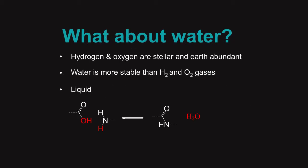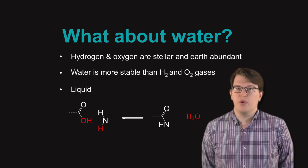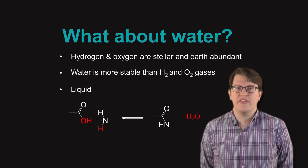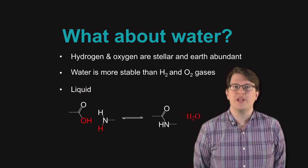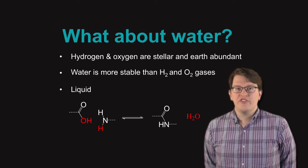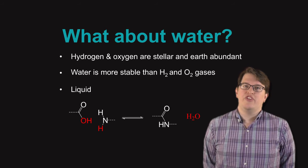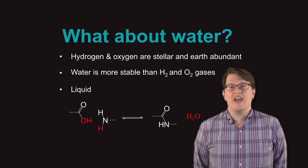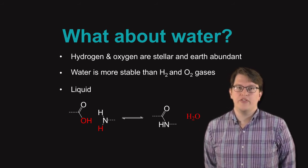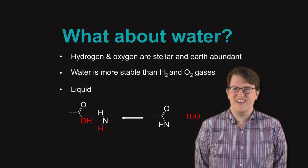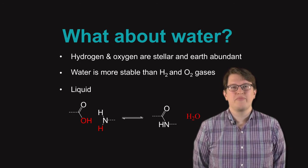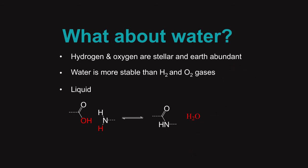So what about water? Hydrogen and oxygen are both stellar and earth abundant, which means that water is possible to be formed in numerous places. Water is also more stable than hydrogen and oxygen gases at the conditions of the surface of the earth. This is why fire produces water as one of the products rather than hydrogen gas and oxygen gas. And it's a liquid.